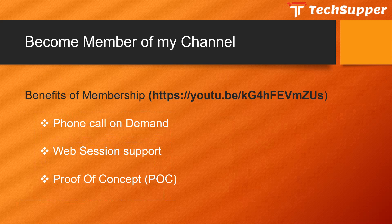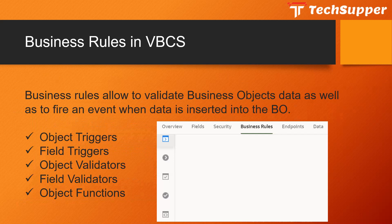So let's get started. What are business rules? Business rules allow you to validate business object data as well as to fire an event when data is inserted into the business object. They are seeded functionality of business objects, available only in OIC Gen 2, not in Gen 1. When you create a business object there is a business rules tab where you can activate them. There are five types: object triggers, field triggers, object validators, field validators, and object functions.